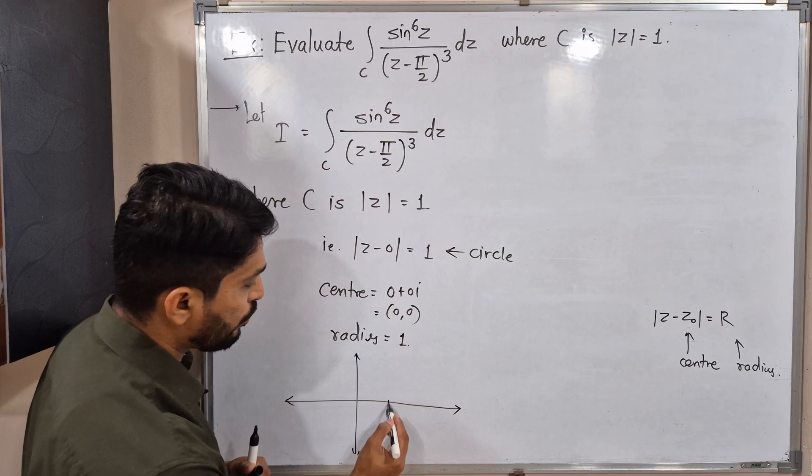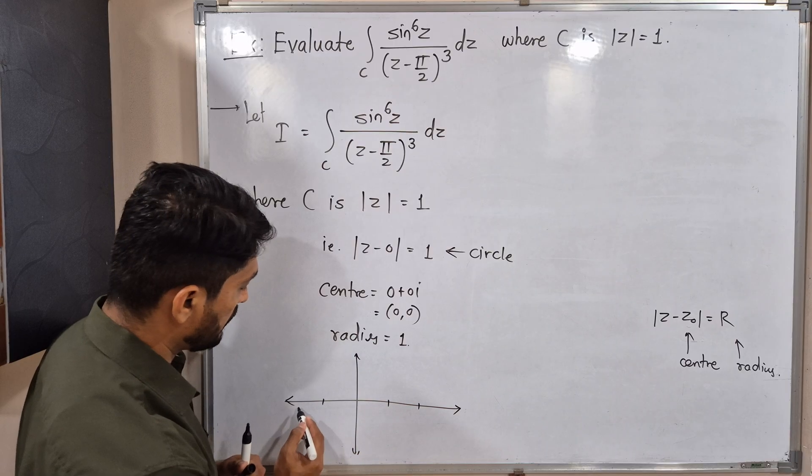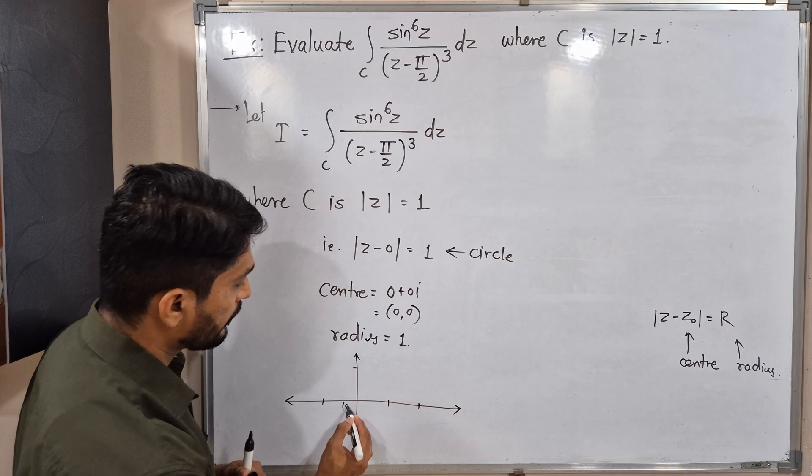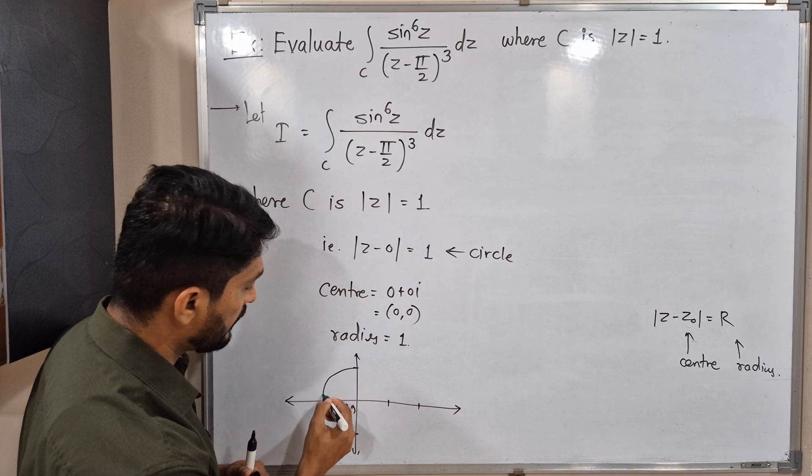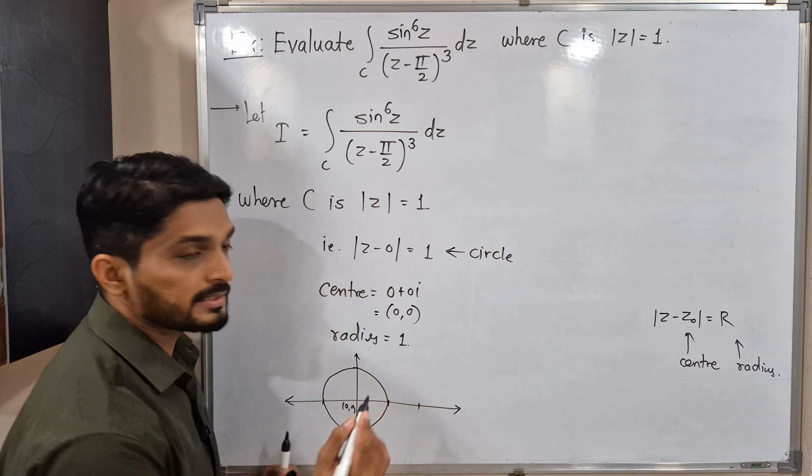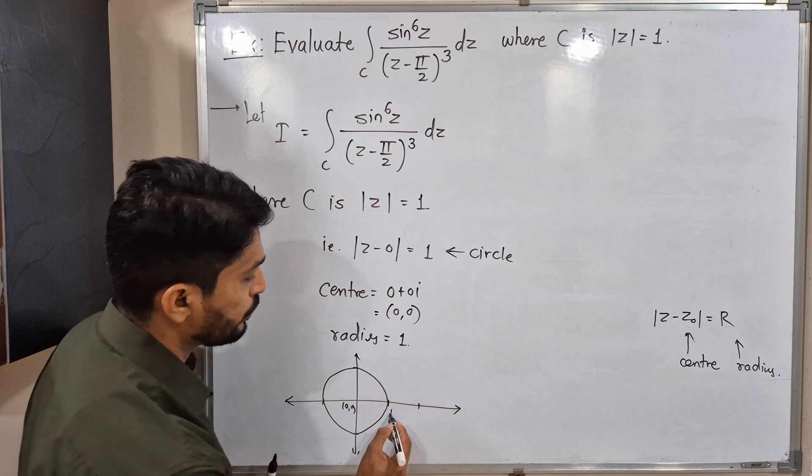Let us draw this circle. This is the imaginary axis, this is the real axis. Let us have some scaling: 1, 2, minus 1, 1, minus 1. Its center is (0, 0) and radius is 1, so we will have the circle like this. Radius is 1 here.